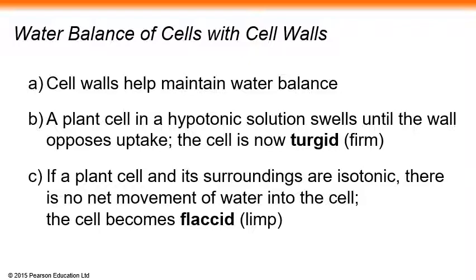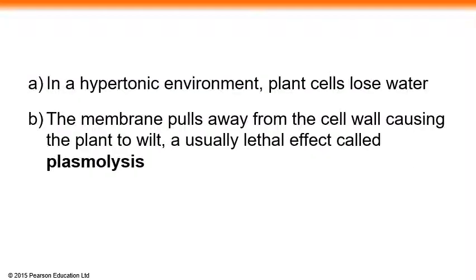In an isotonic condition, the cell becomes flaccid and soft. In a hypertonic environment, plant cells lose water — the membrane pulls away from the cell wall, causing the plant to wilt — a usually lethal effect called plasmolysis.